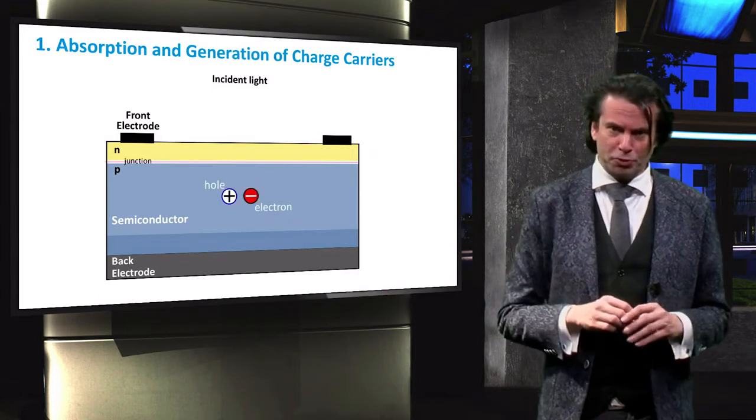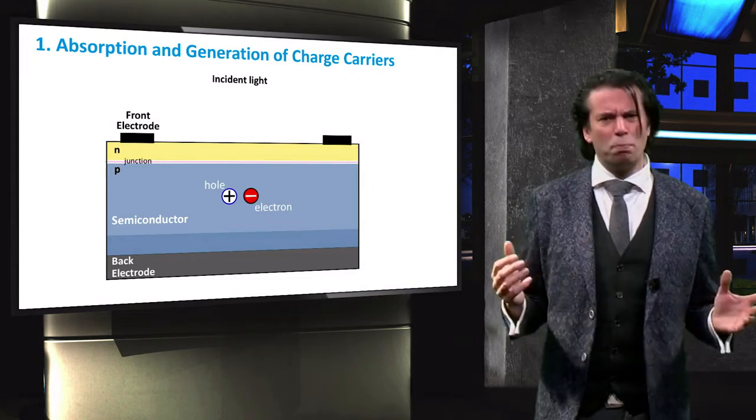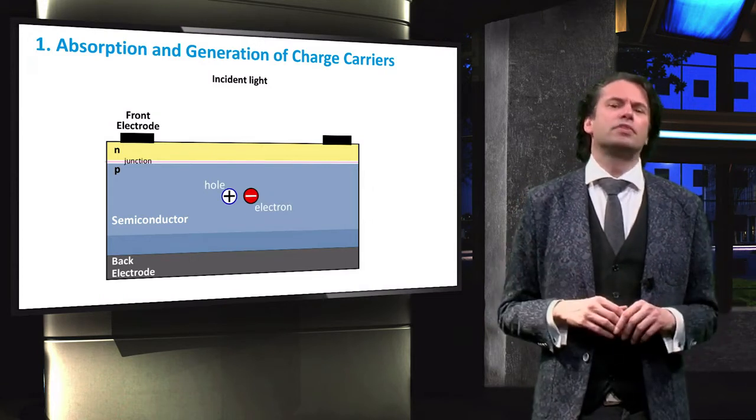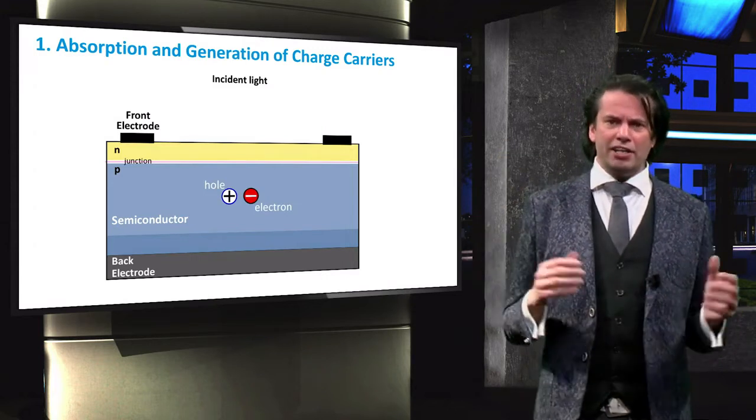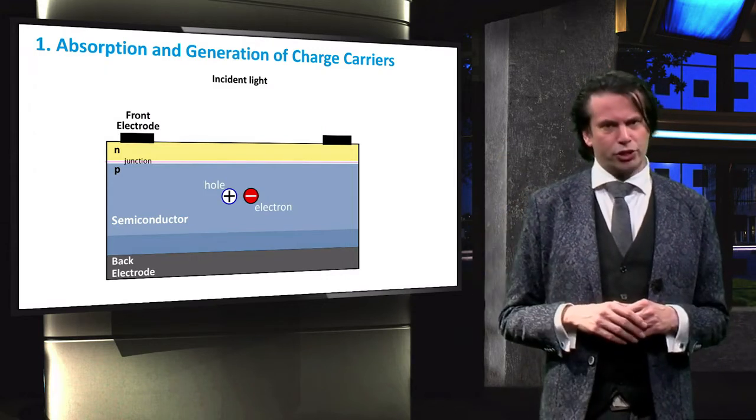Upon absorption of the photons, an electron-hole pair is generated. A negatively charged electron is excited to a higher energy state, and it leaves behind a positively charged hole.